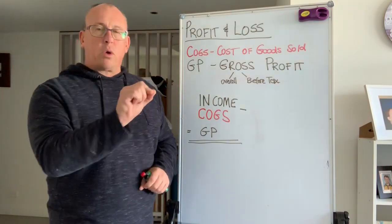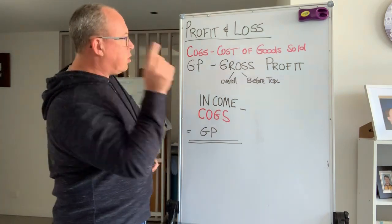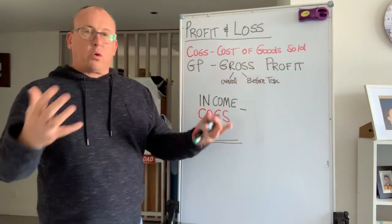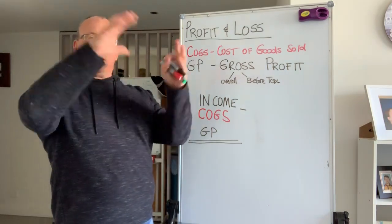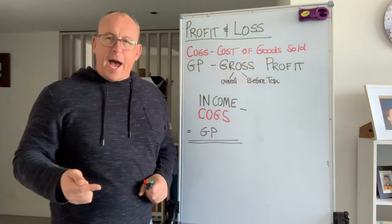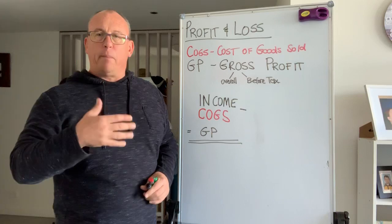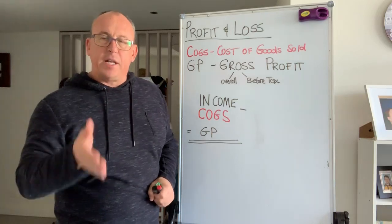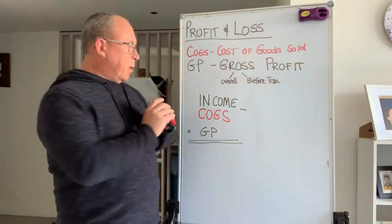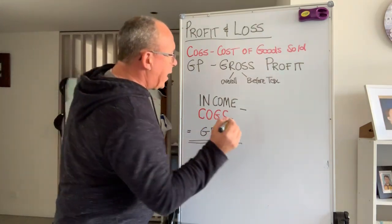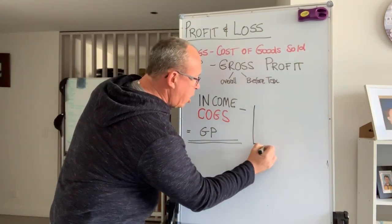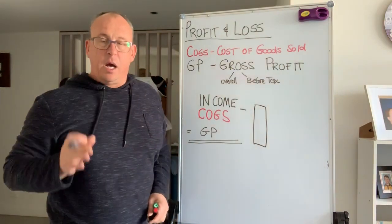GP stands for gross profit. Now, gross means overall. So if you've got the gross weight of something, it generally means everything. It also means before tax. So in a lot of countries, if you've got before-tax wages, it means before tax. Here's the interesting thing: when we look at a P&L, we're looking at the GP and COGS for the whole business.